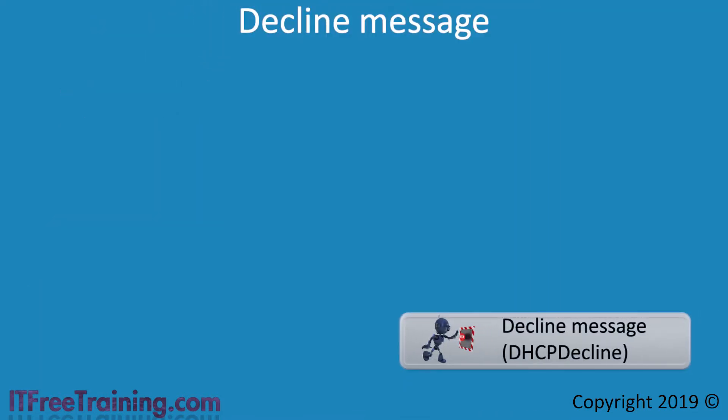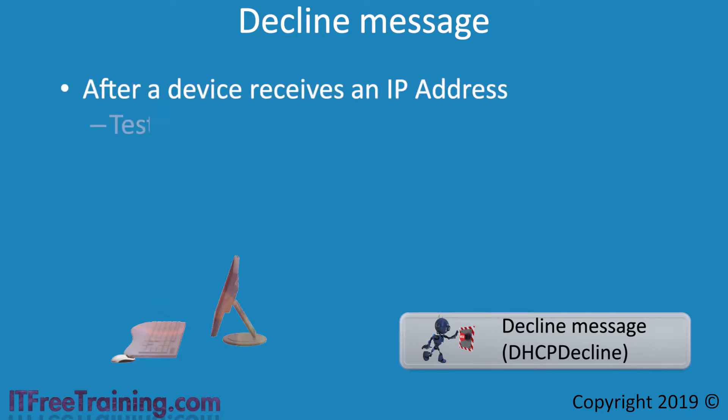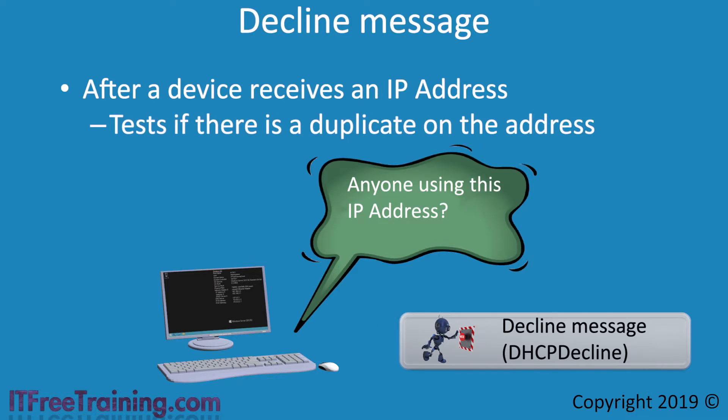The next message type is the Decline message. After a device receives an IP address, it checks the network to make sure that no other device is using that IP address. If it detects the IP address is already in use, it will send a Decline message to the DHCP server. When the DHCP server receives the Decline message, it should mark this IP address as in use and not attempt to allocate it again.